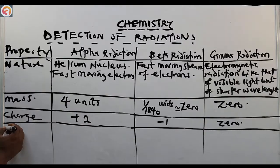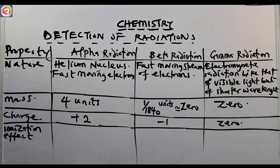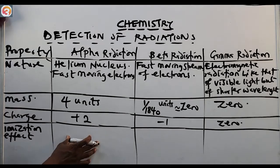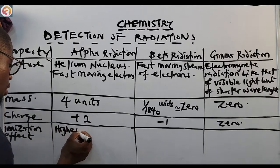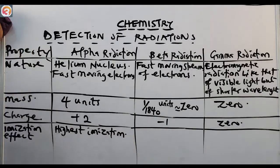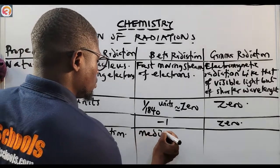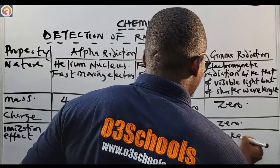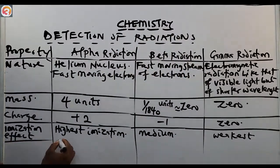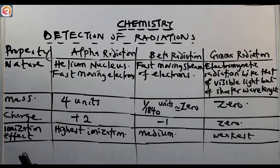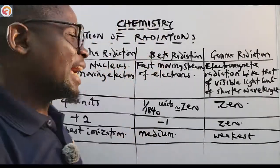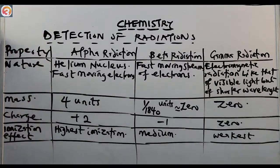Comparing their ionization effects: Alpha radiation has the highest ionization effect. Beta radiation has medium ionization. Gamma radiation has the weakest ionization effect of the three.